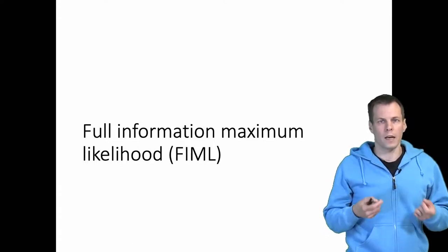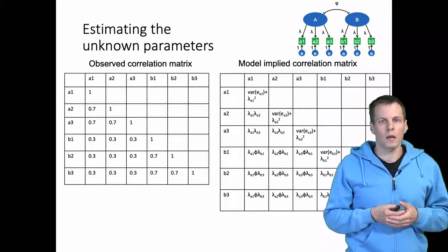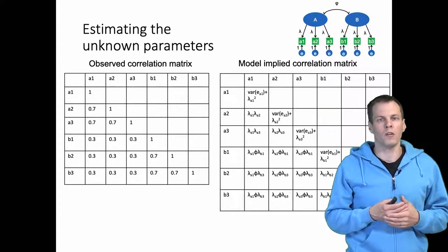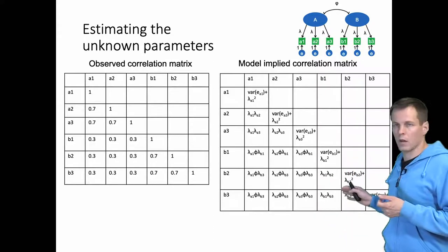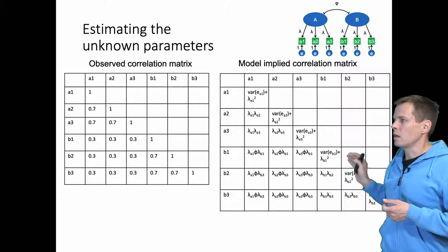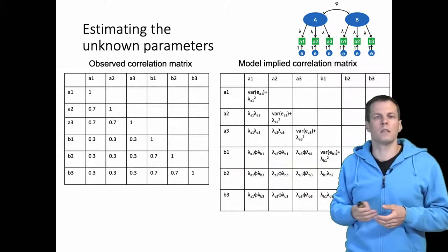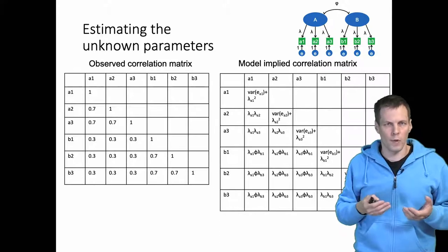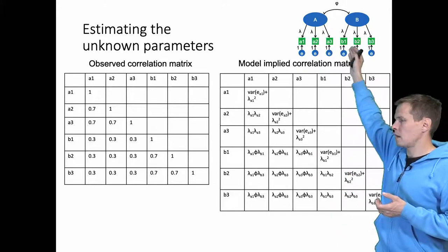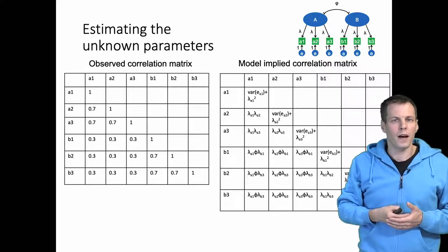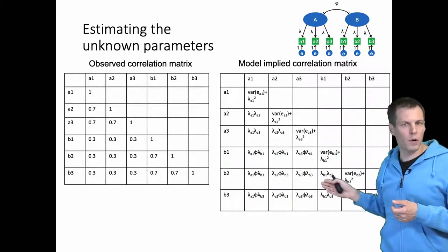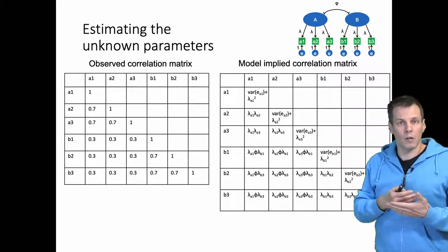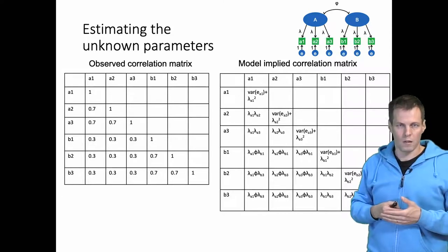Let's take a look at what FIML does. Normally when you estimate maximum likelihood estimates of a latent variable model or any other structural regression model, you have the model-implied correlation matrix that you construct based on the model, and then you have the observed covariances. You find the values of the model parameters — in this case the lambdas and the correlation of the factor analysis model — and try to make the observed and implied correlation matrices as similar as possible. Those are the maximum likelihood estimates.